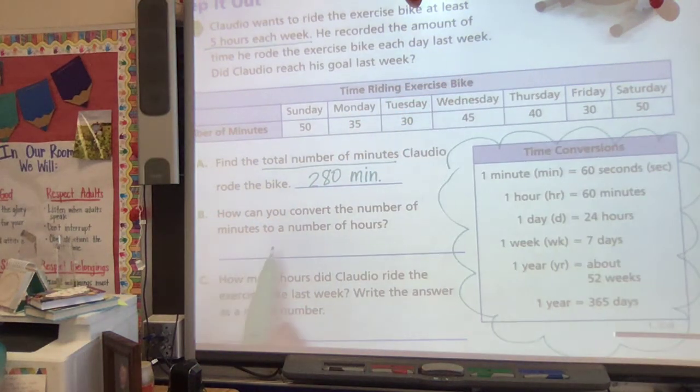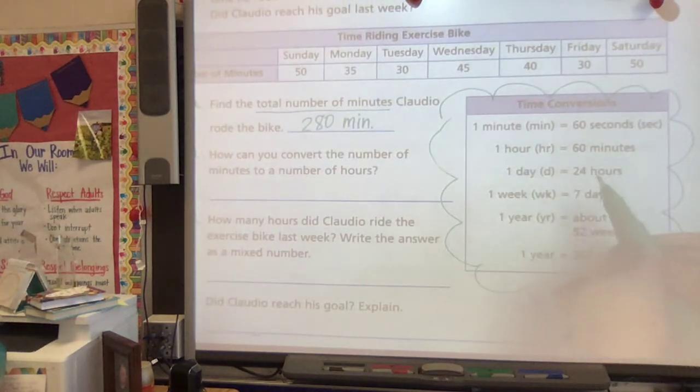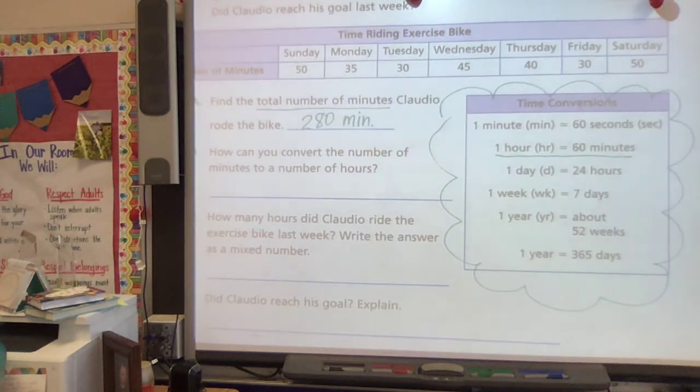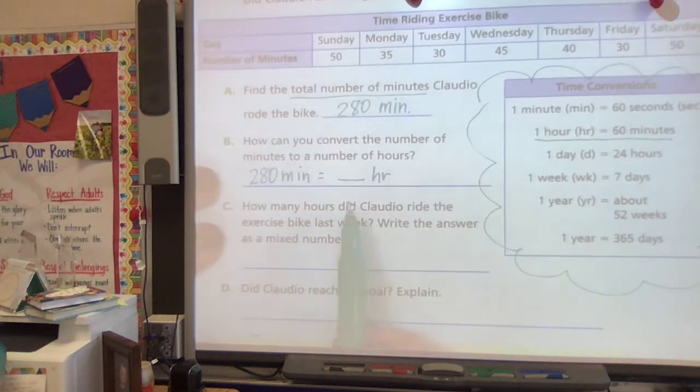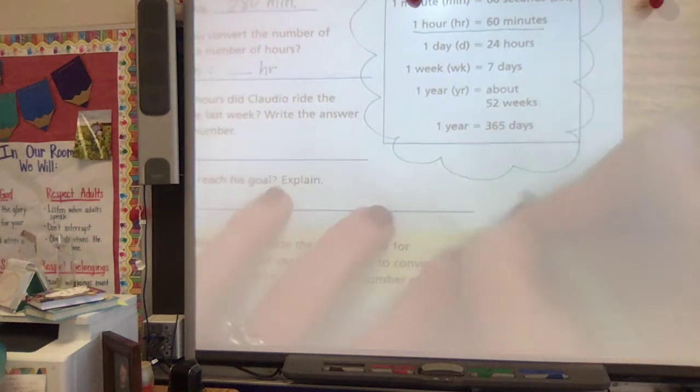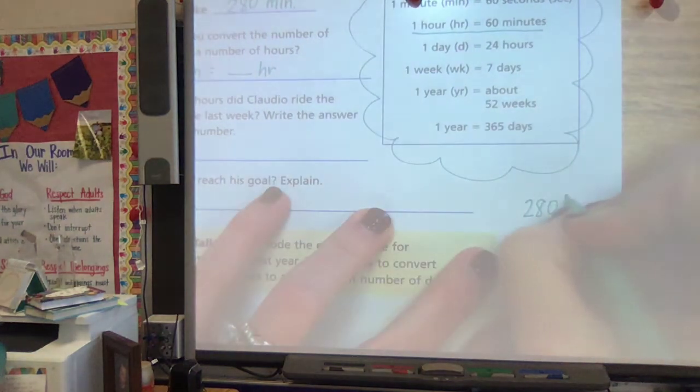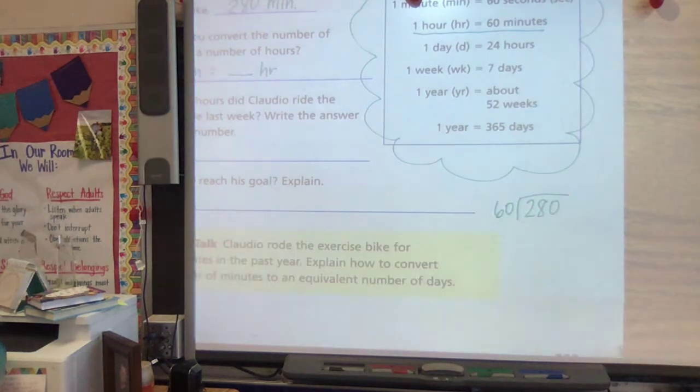So now it says, how can you convert the number of minutes to the number of hours? Well, we'll look right here. We know there's 60 minutes in an hour. So 280 minutes is how many hours? Let's think about what we're doing again. We're going from smaller to bigger, so we're going to divide. So right over here, I'm going to take my 280 and I know I need to divide by 60.